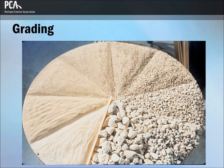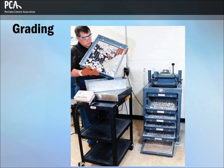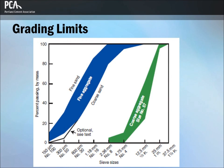Grading is the particle size distribution of an aggregate, as determined by a sieve analysis. The range of particle size in aggregate is illustrated in this picture. The aggregate particle size is determined using wire mesh sieves with square openings. The seven standard ASTM C33 sieves for fine aggregate have openings ranging from 150 micrometers to 9.5 mm. The 13 standard sieves for coarse aggregate have openings ranging from 1.18 mm to 100 mm. Size numbers or grading sizes for coarse aggregates apply to the amounts of aggregate and percentages that pass through an assortment of sieves.